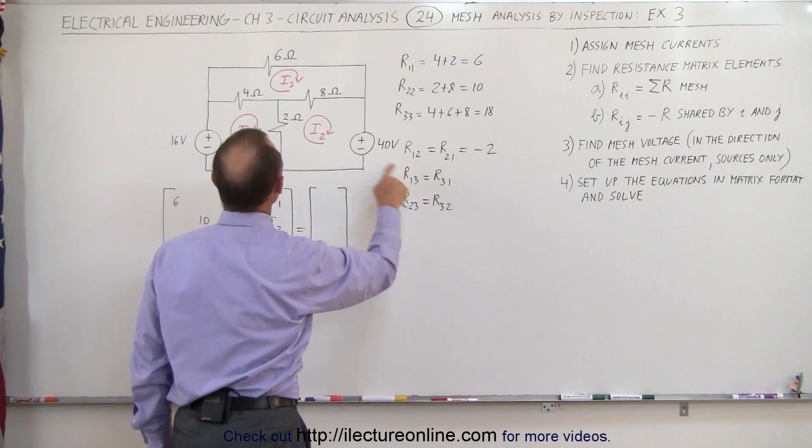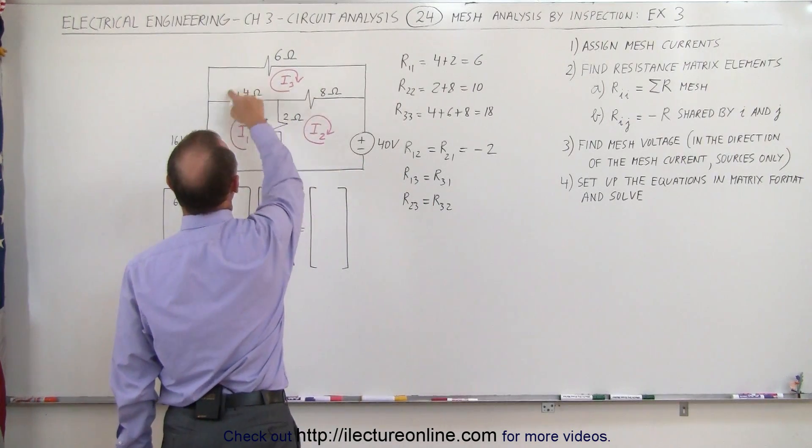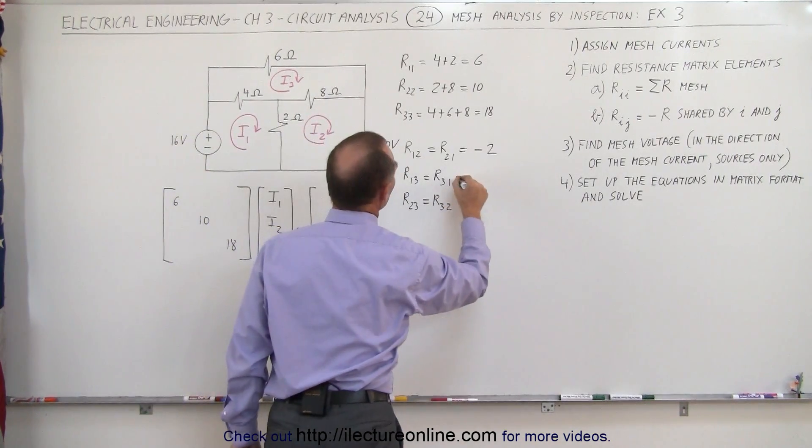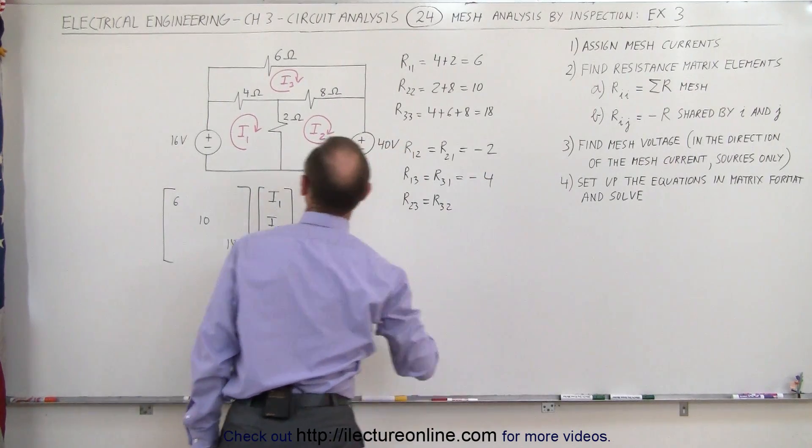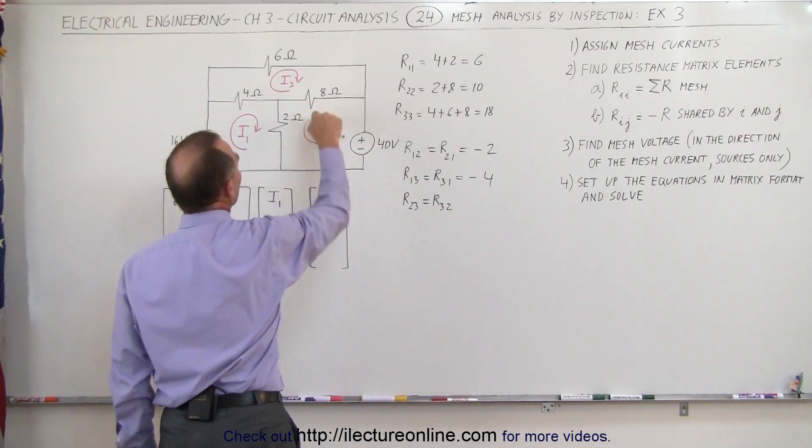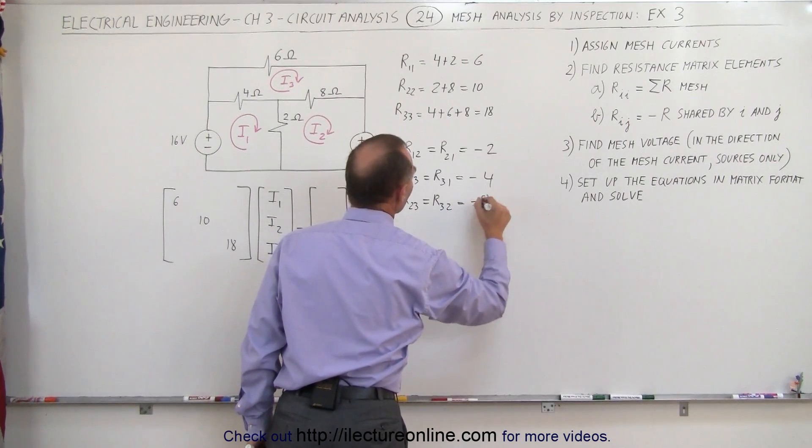Between 1 and 3, we're sharing a 4 ohm resistor. That's equal to a negative 4. Always put a negative in front. And between 2 and 3, we're sharing an 8 ohm resistor. That's minus 8.